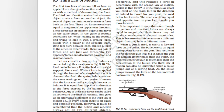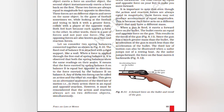Consider two spring balances connected together. The fixed end of balance B is attached to a rigid support like a wall. When a force is applied through the free end of spring balance A, both spring balances show the same reading on their scales. This means the force exerted by spring balance A on balance B is equal but opposite in direction to the force exerted by balance B on balance A. Any of the two forces can be called action and the other reaction. This gives us an alternate statement of the third law: to every action there is an equal and opposite reaction.